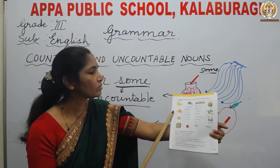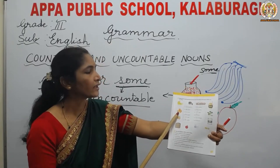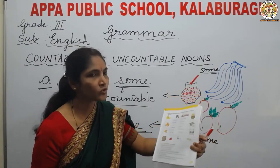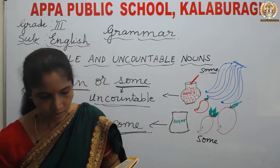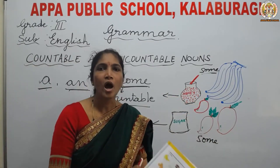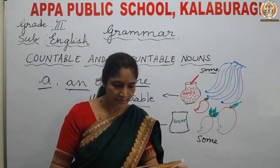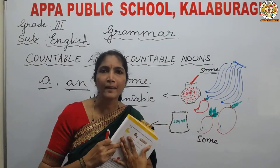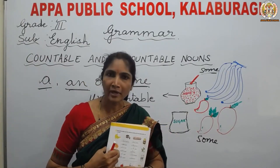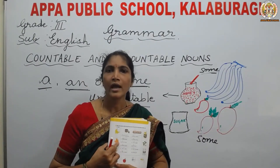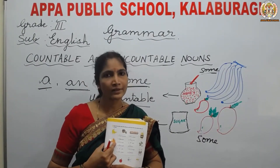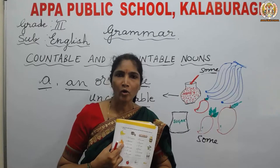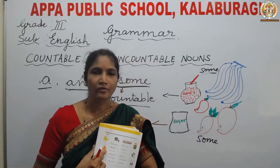Then some juice — you can see in the glass, there is some juice, so we say some juice. I hope you all have understood how to use a, an, or some. These are all the exercises from the textbook; I will be sending them in the PDF. You have to write in the textbook, and the question answers I will also send in the PDF, but you should write in the English notebook. I hope you all have understood. Have a good day, children. Thank you.